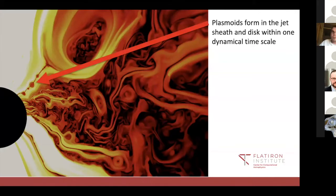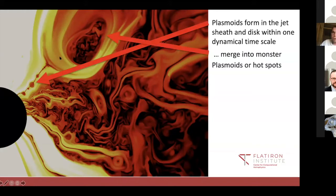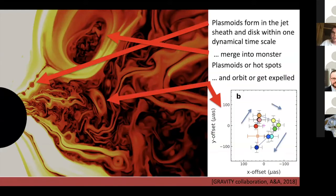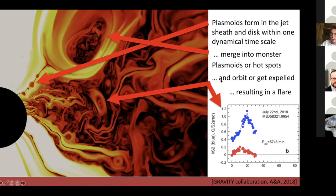Looking at this video in more detail, we see a plasmoid chain forming, and plasmoids that escape diagonally form a very big 'monster plasmoid' or hotspot. That monster plasmoid can orbit, and at some point it gets expelled — which looks a lot like what the GRAVITY interferometer observed, shown here on the right. The observed hotspot orbits for about one period within the inner 10 Schwarzschild radii, exactly where our simulated hotspot lives. This results in a flare indicated by a peak in the intensity shown by the blue and red lines.